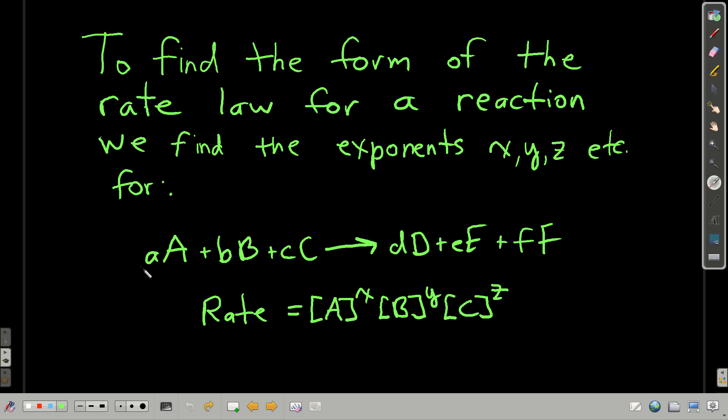Notice X, Y, and Z are not necessarily, and many times they're not, the coefficients. They're different. They can be. Sometimes they're the same, sometimes they're different. Anyway, we need to find X, Y, and Z, and then we'll have the form of the rate law.